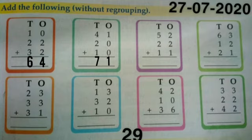Like that we will solve the third question. Here the sum of the numbers in ones column is 5 and the sum of the numbers in tens column is 8. So the answer is 85.